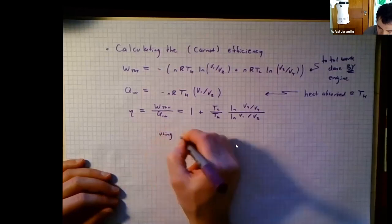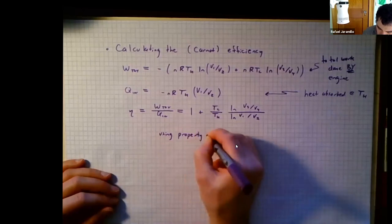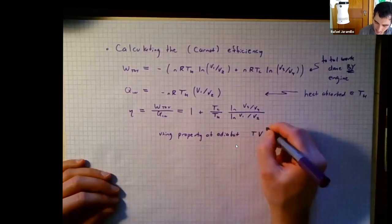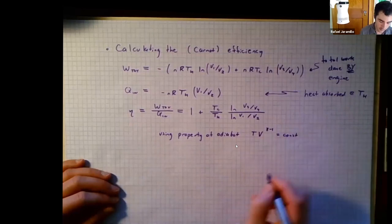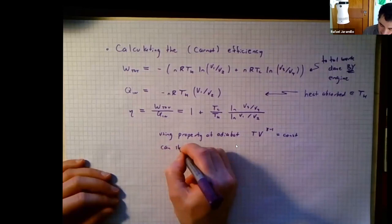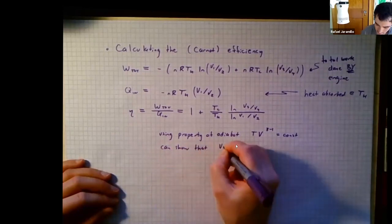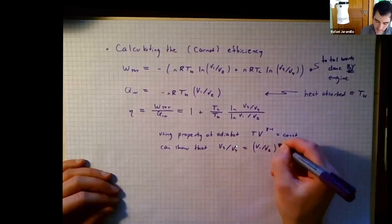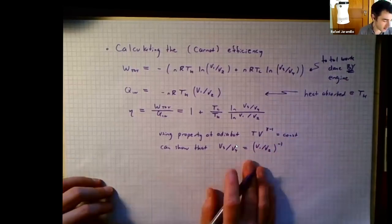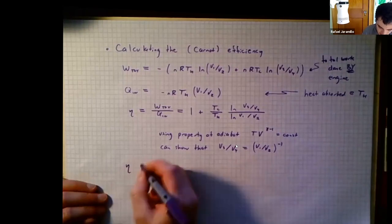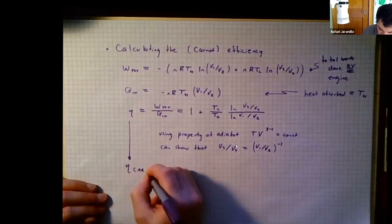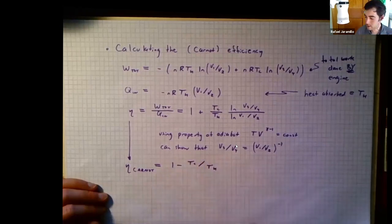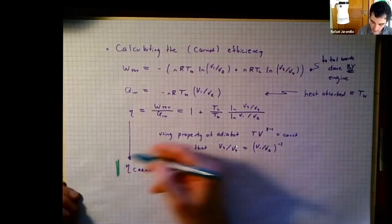Using the property of adiabats — T*V^(γ−1) = constant — you can show that V3/V4 = (V1/V2)^(−1), which means ln(V3/V4) = −ln(V1/V2). Substituting this, we get the Carnot efficiency: eta = 1 − T_cold/T_hot. After all those steps, we have a very simple expression.